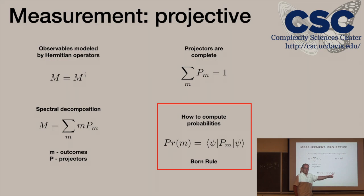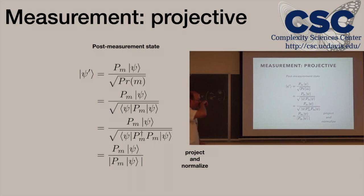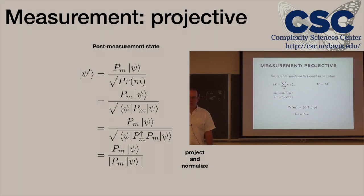Here we have essentially all we need to understand projective measurement, sometimes called the Born rule. Given a particular state, I can tell you the probability of obtaining a particular outcome M by computing the inner product with the associated projector sandwiched in between.